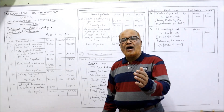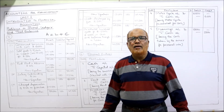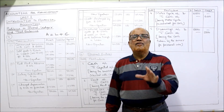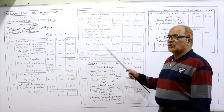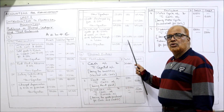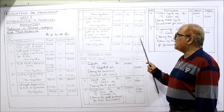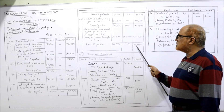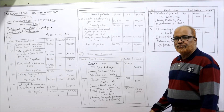Seventh transaction: purchased household goods for 15,000 — 5,000 in cash and 10,000 through a loan. Household items purchased for personal use is called drawings. Cash going out: minus 5,000 in assets. Loan taken by the business: plus 10,000 in liabilities. Total drawings of 15,000 deducted from capital. New equation: assets 49,500 − 5,000 = 44,500; liabilities 100 + 10,000 = 10,100; capital 49,400 − 15,000 = 34,400. Check: 10,100 + 34,400 = 44,500.